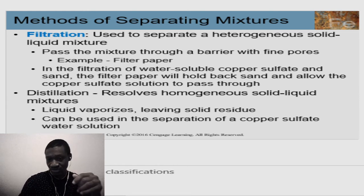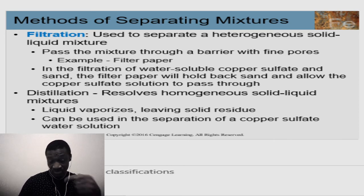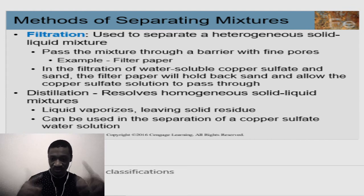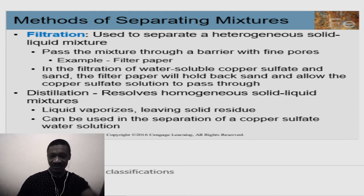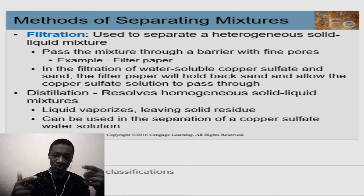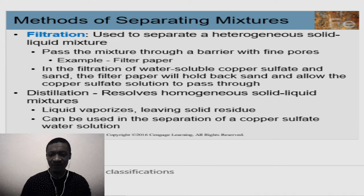Distillation is another method and this resolves homogeneous solid-liquid mixtures. Remember, heterogeneous means you can still see the difference between components, while homogeneous means they are uniform. In distillation, you vaporize the liquid and the solid remains. You can use a mix of methods to separate things — it's almost like solving a puzzle, thinking through what each method can do that another cannot.